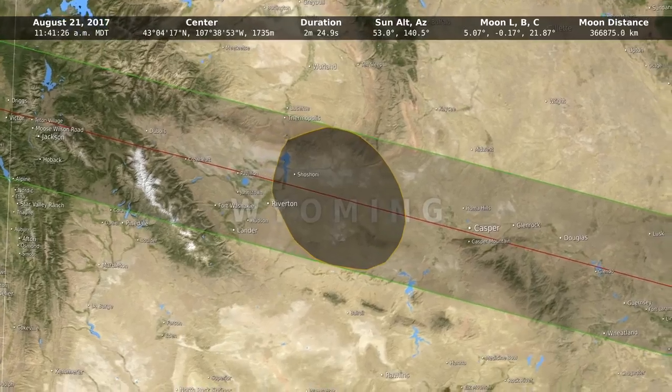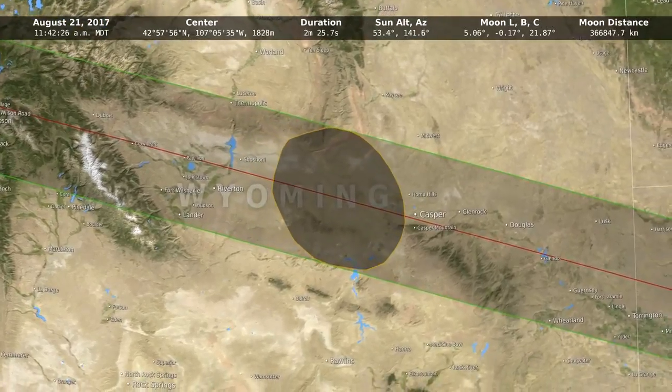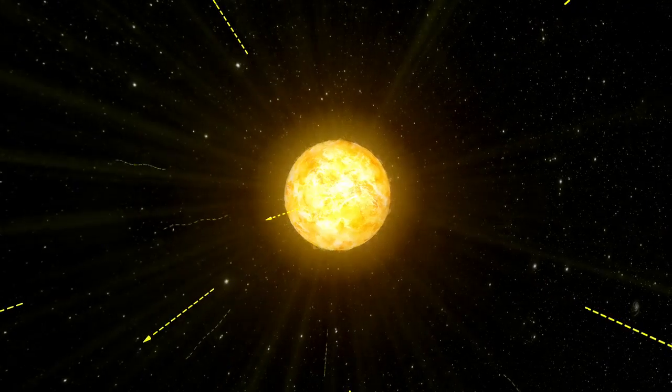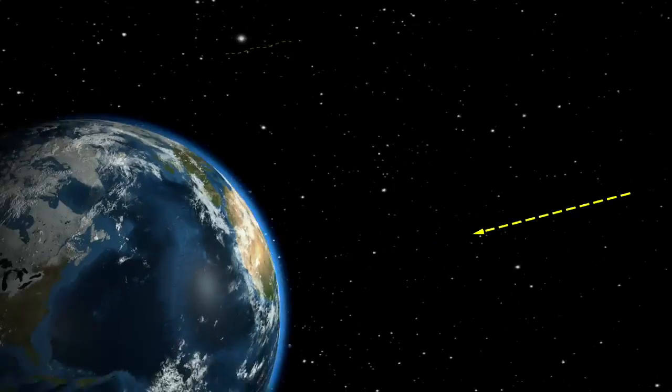A team of scientists will combine data from EPIC with measurements taken on the ground to learn more about how the sun's energy is absorbed and reflected in Earth's atmosphere.